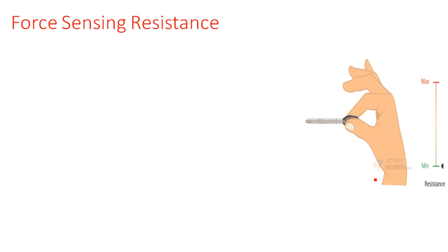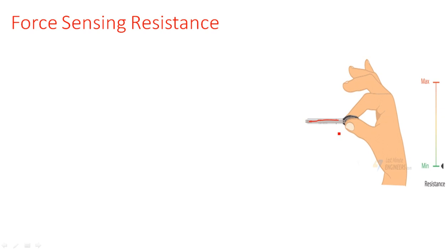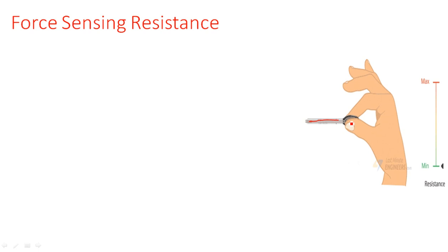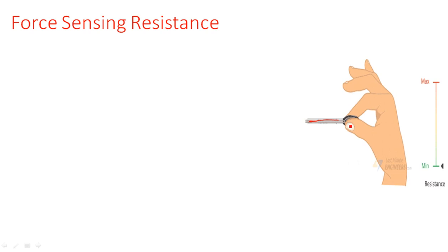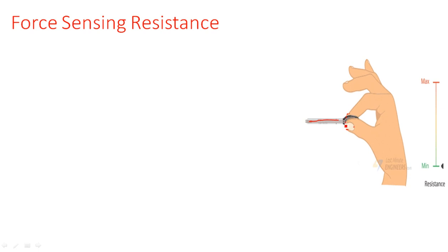Another technique is the force sensing resistor (FSR). Looking at the animation, we can see how the FSR acts. It is a device acting as a force sensing element whose resistance value changes based on the applied force. If two fingers compress this element tightly, the resistance value will decrease. If we forcefully compress this force sensing resistor, the resistance value will decrease.